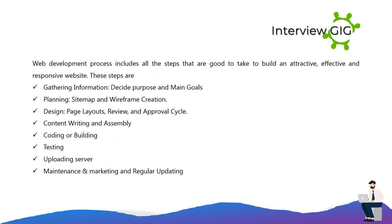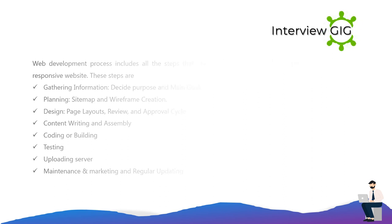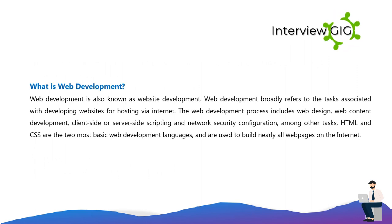The web development process includes all the steps needed to build an attractive, effective, and responsive website. These steps are: (1) gathering information and deciding purpose and main goals, (2) planning sitemap and wireframe creation, (3) design and page layouts review and approval cycle, (4) content writing and assembly, (5) coding or building, (6) testing, (7) uploading to server, (8) maintenance, marketing, and regular updating.